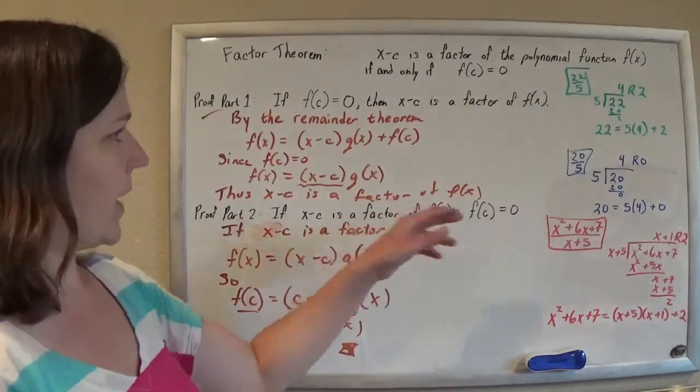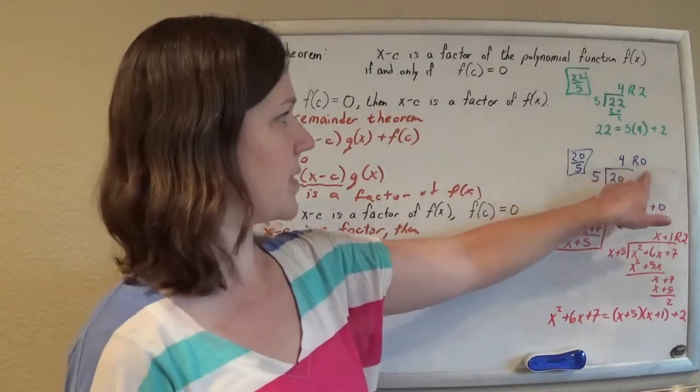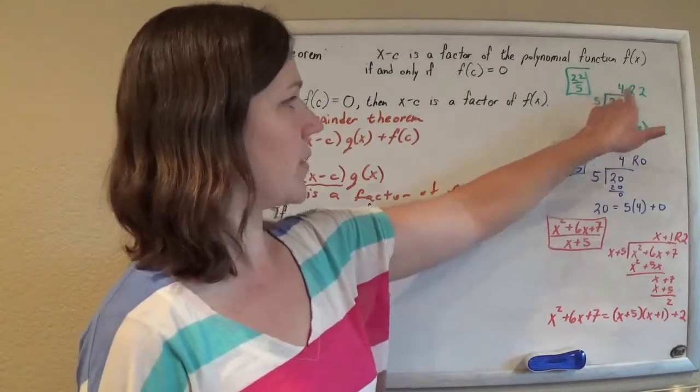And so we're writing everything as this, like this top number will be this times this plus that, right? 22 will equal 5 times 4 plus 2.